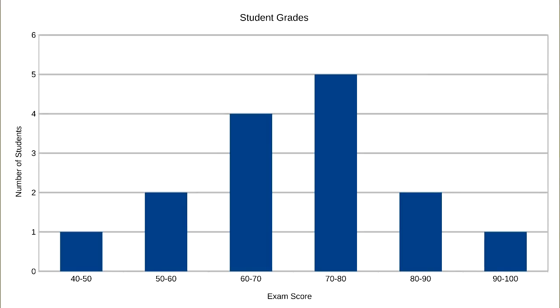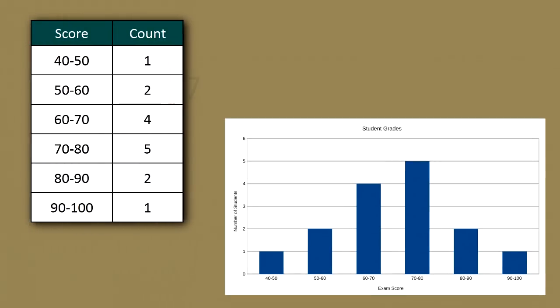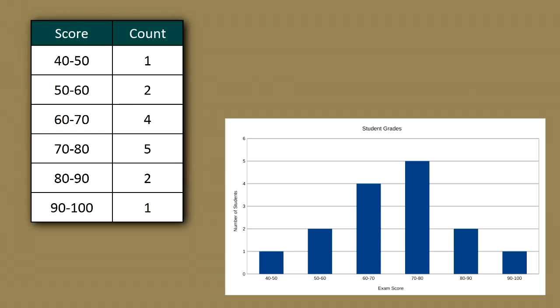As we've seen, the mode is not always at the center. The center of a distribution is its midpoint — the value that divides the distribution so that approximately half the observations take smaller values and approximately half take larger values. From the histogram, the center of the grade distribution is roughly 70: seven students scored below 70 and eight scored above 70.